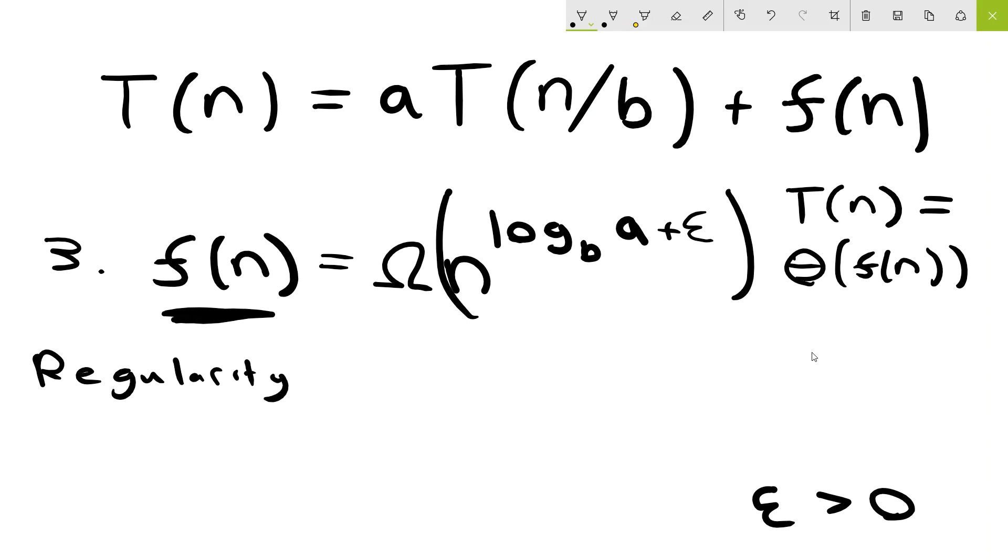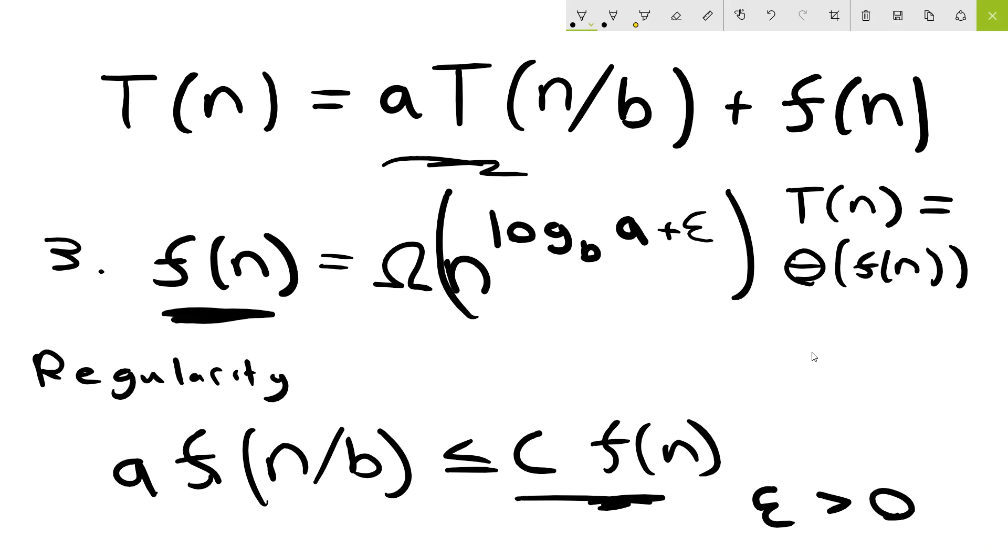We need to check that for the values a and the function f of n over b, so this is from above, that for some value c times f of n, this c times f of n term is greater than or equal to the a times f of n over b.